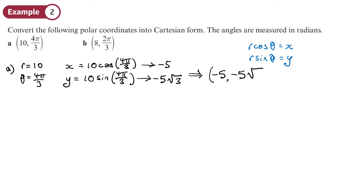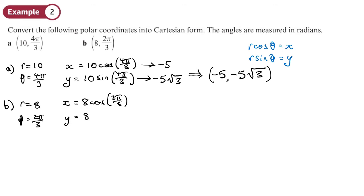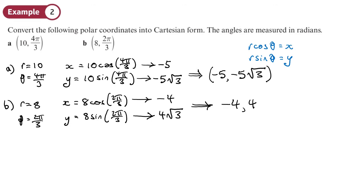So the Cartesian coordinate is (−5, −5√3). For part b, r = 8 and θ = 2π/3. The x-coordinate is 8 cos(2π/3) = −4, and the y-coordinate is 8 sin(2π/3) = 4√3. So the Cartesian coordinate is (−4, 4√3). You don't need diagrams for these — just plug them straight in.